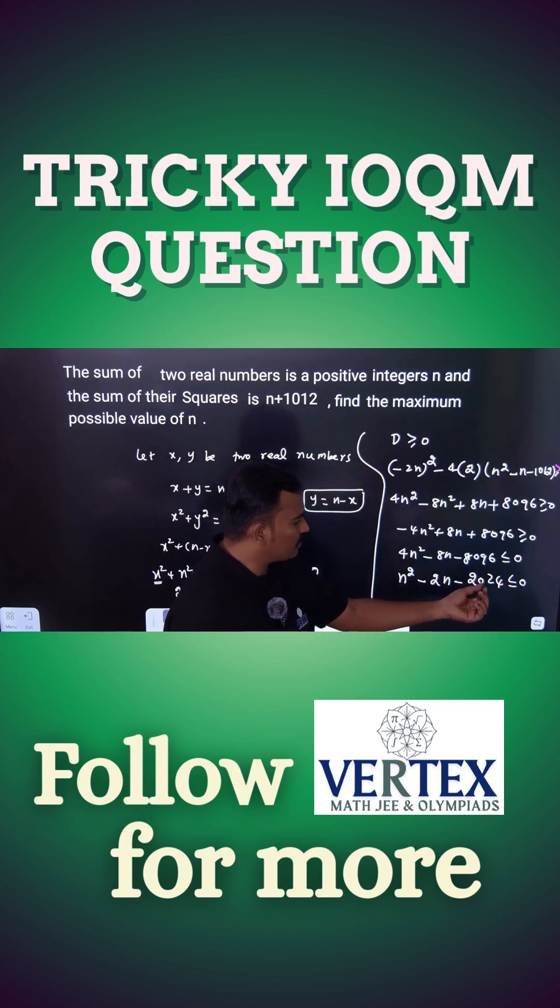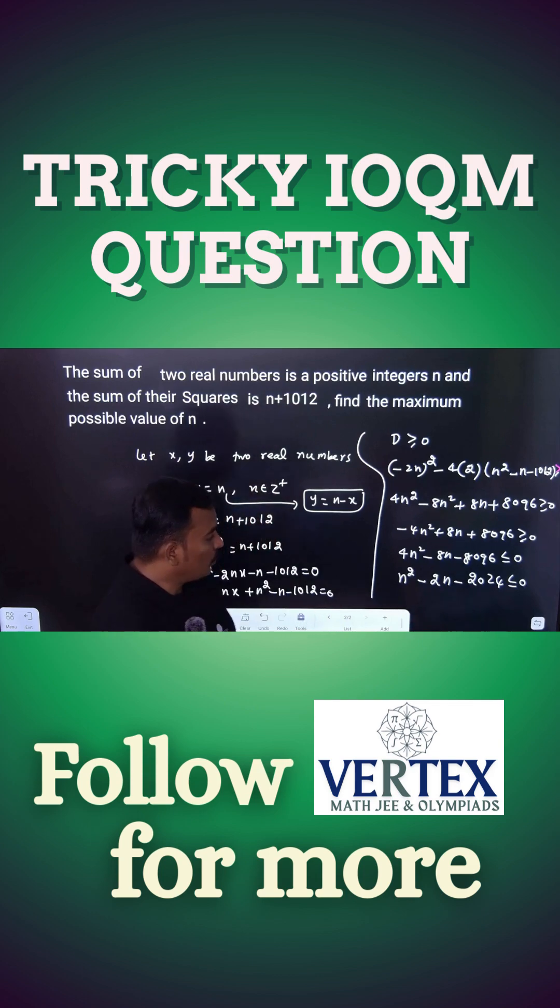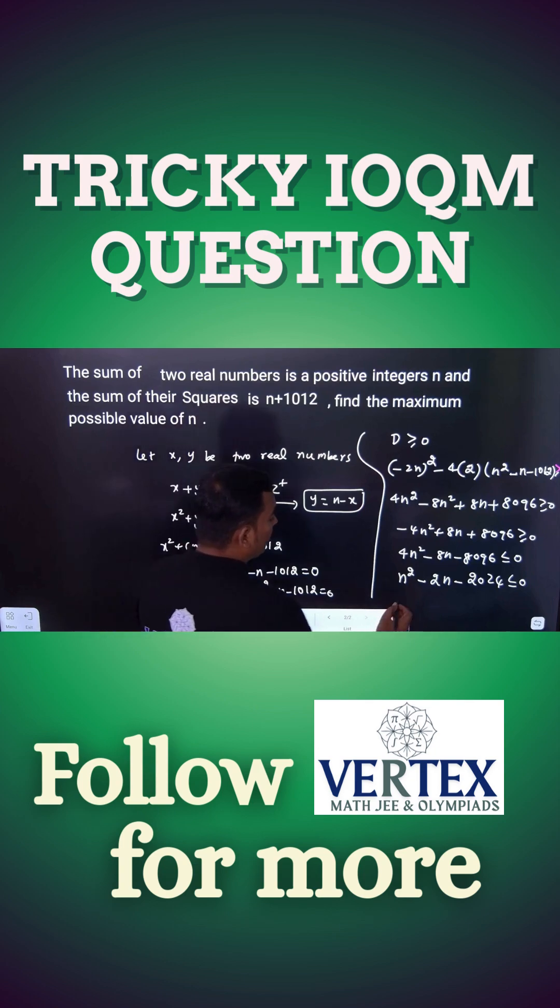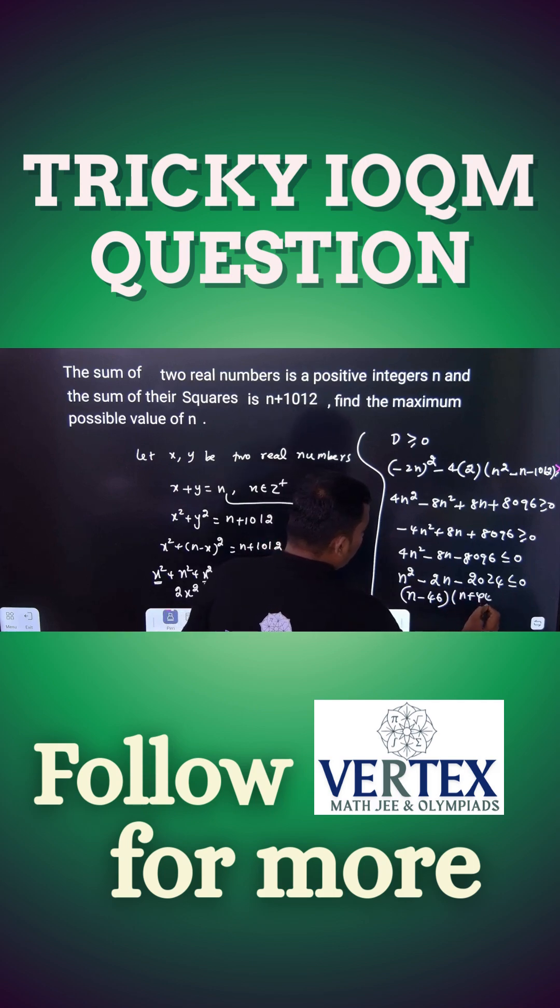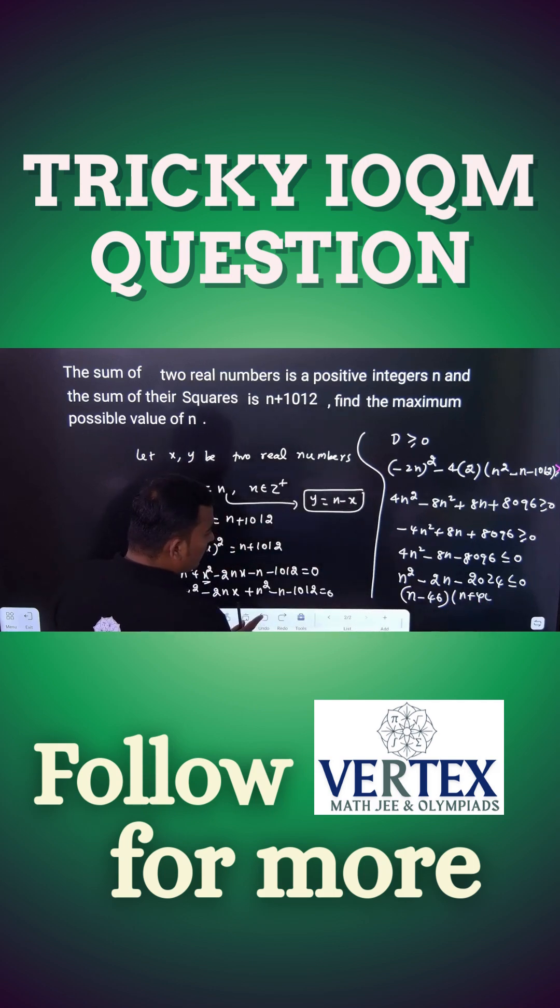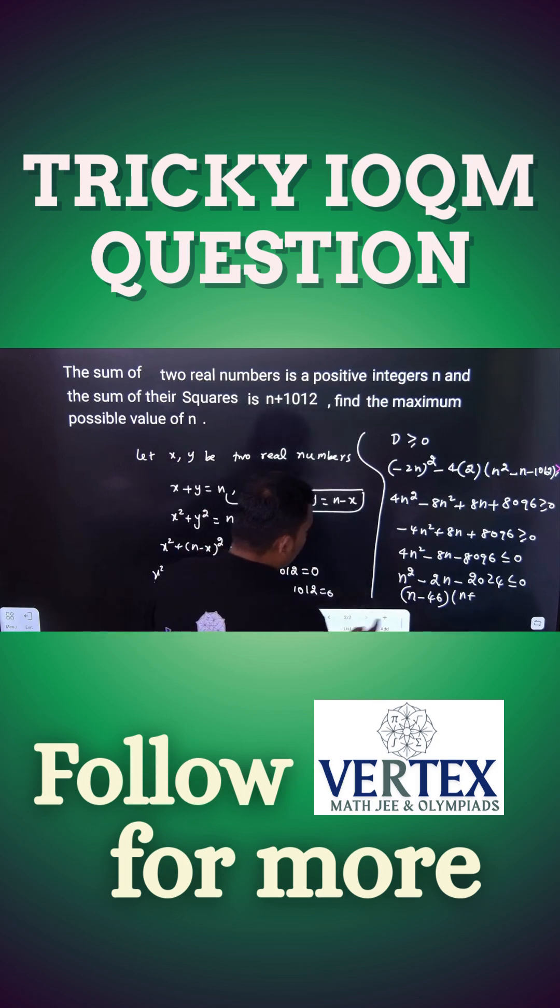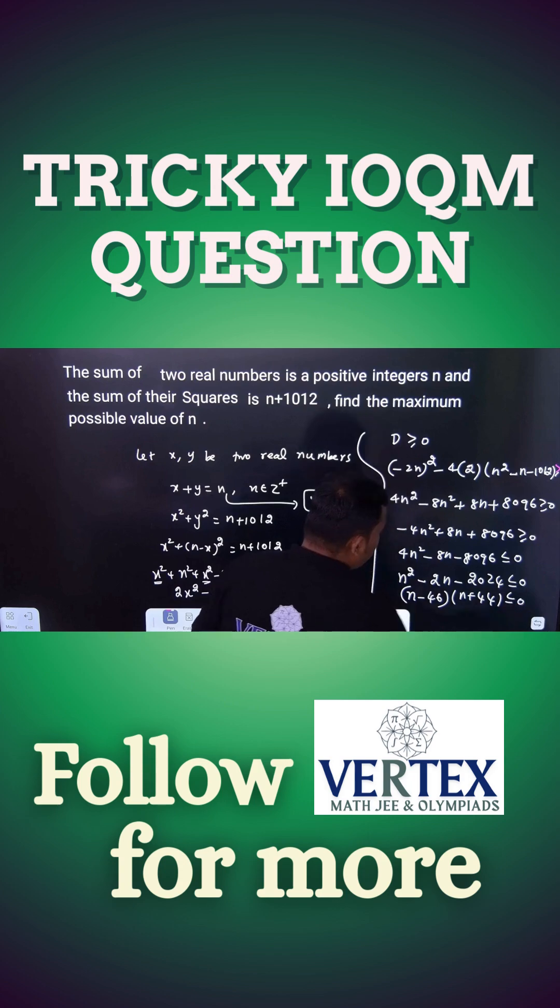You can see the product is minus 2024, the sum is minus 2. Which factors are possible? 46 and 44 will come. Therefore, n minus 46 into n plus 44, it is less than 0.